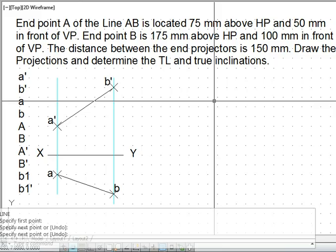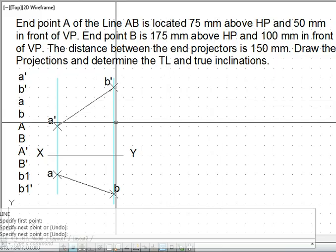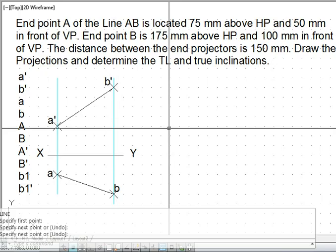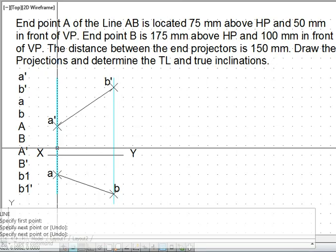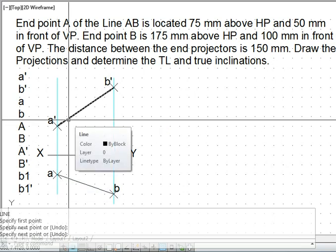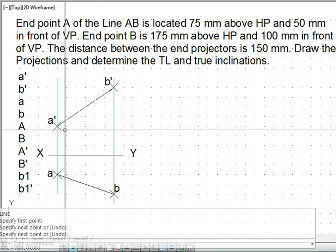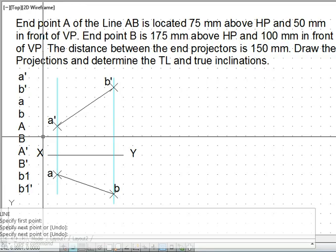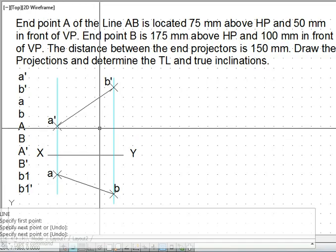To determine the true length, we have demonstrated one procedure in the lecture classes. Same procedure we will apply. What we do? We make the line, the apparent length or the projection of the line horizontal. One of the views we need to make horizontal.